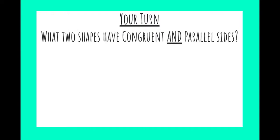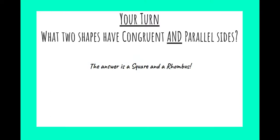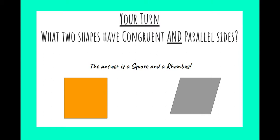Now it's your turn. Pause the video and see if you can answer this question: what two shapes have congruent and parallel sides? Hopefully you were able to answer it. The answer, of course, is a square and a rhombus. Both have congruent or equal sides and have parallel sides — those two shapes have congruent and parallel sides together.